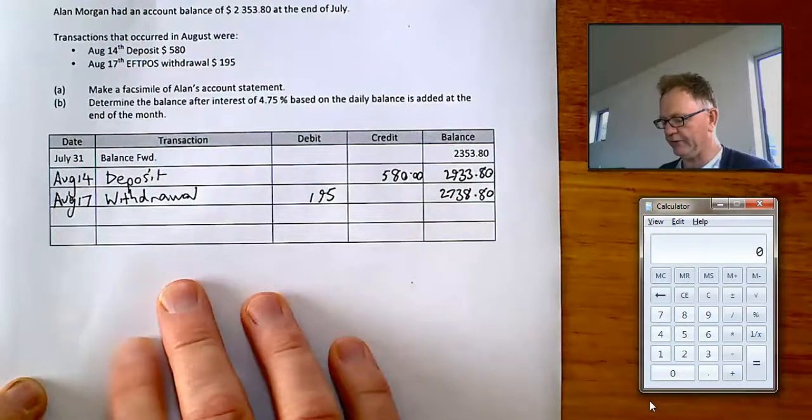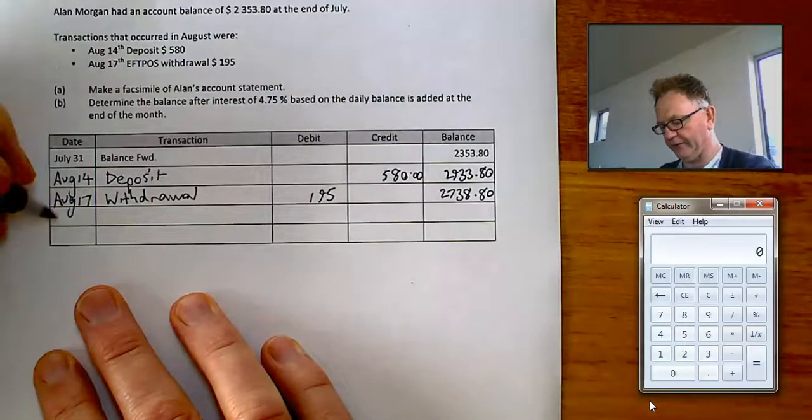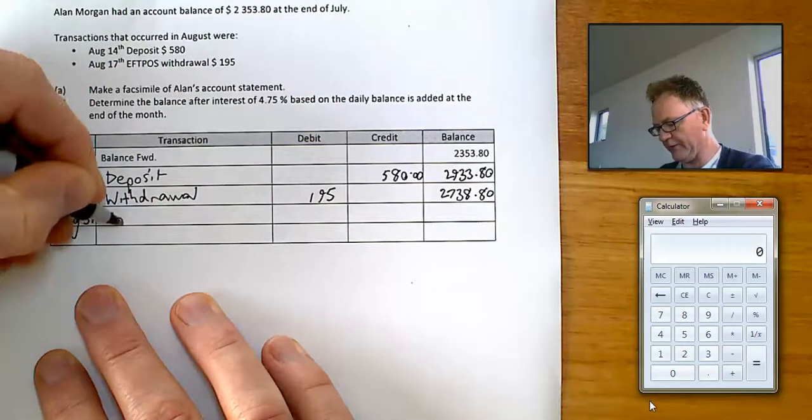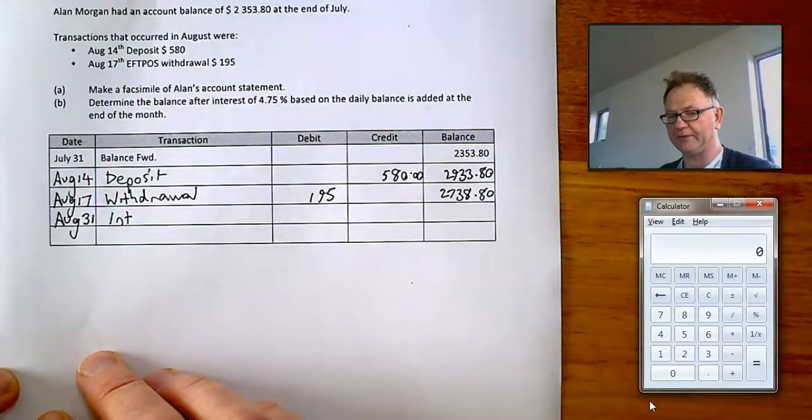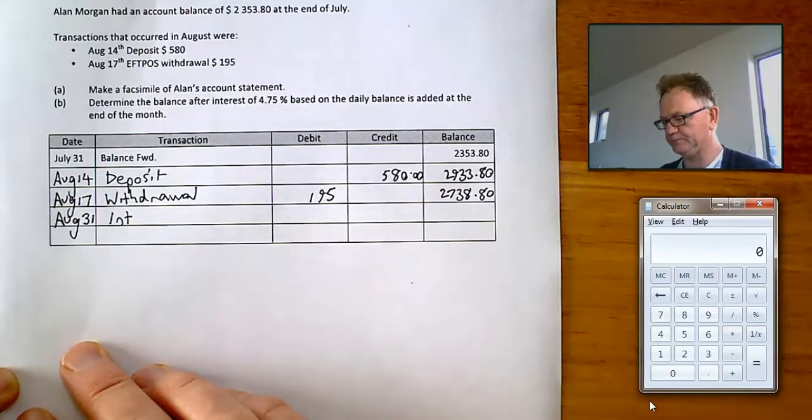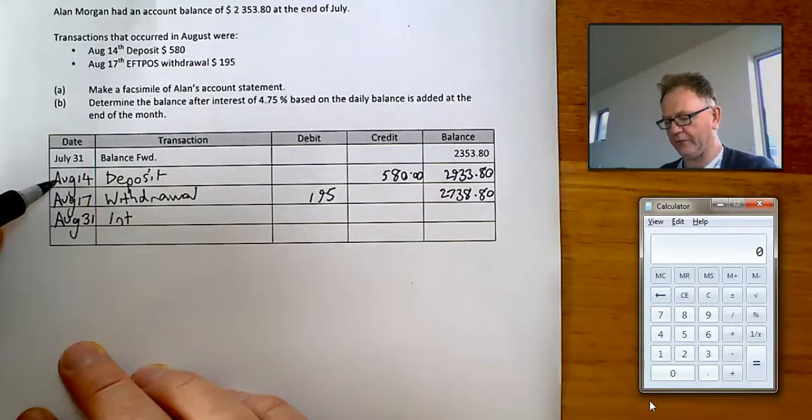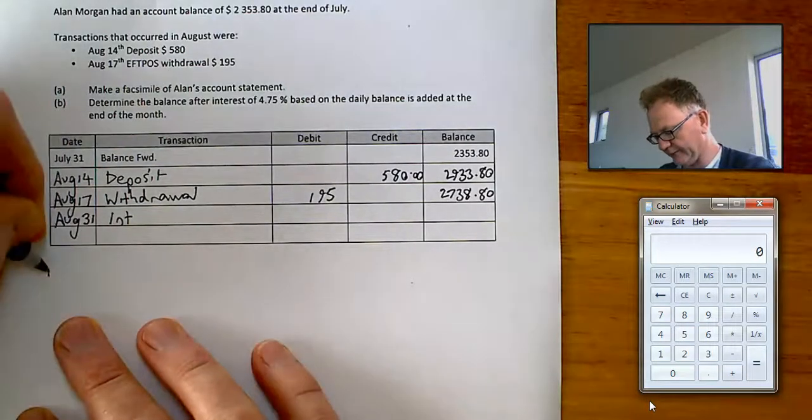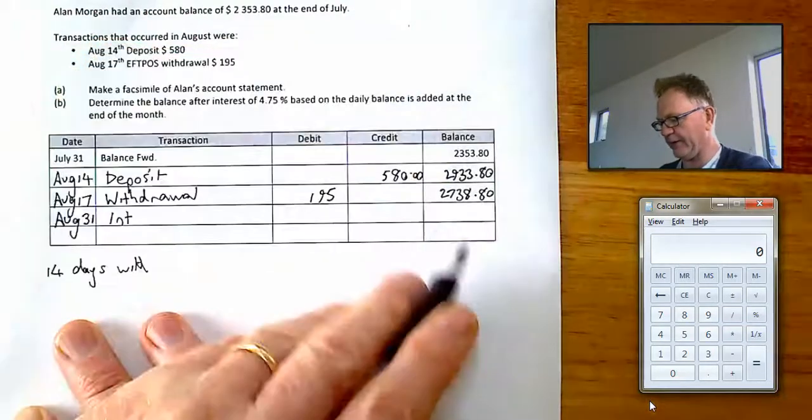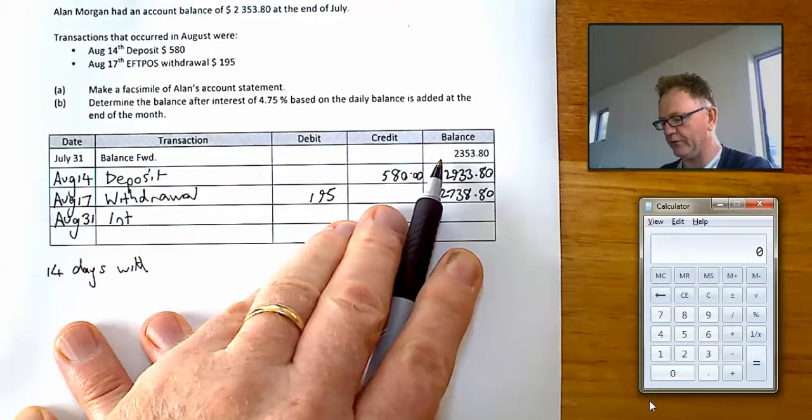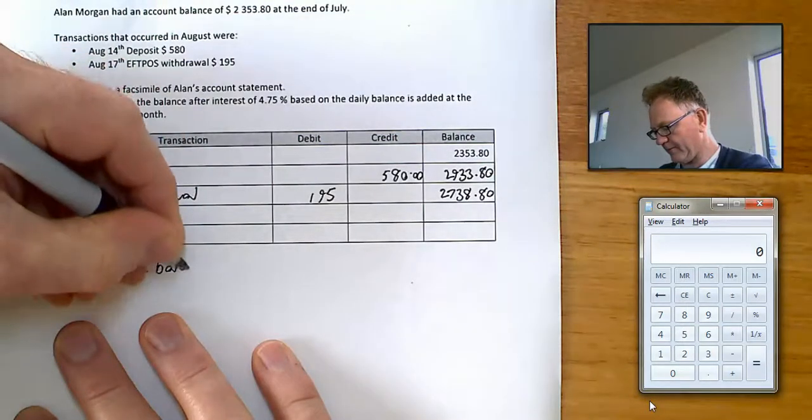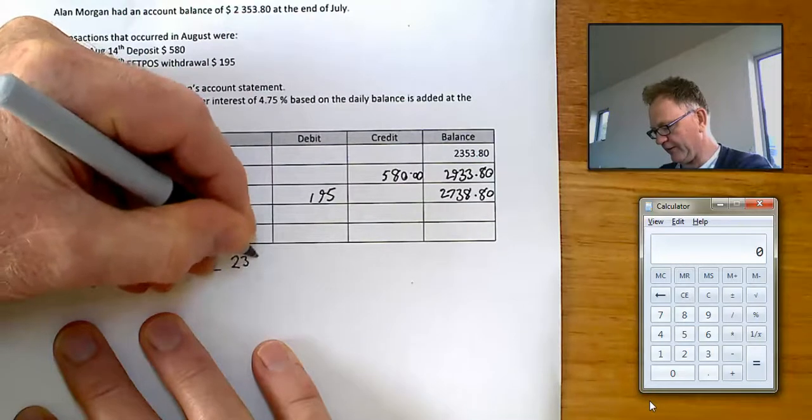Now what we have to do is we have to now work out how much interest he gets added at the end of August. August the 31st it will be. There will be some interest added. And what we have to do is do all the steps of the last question again to work it out. So let's see if we can go through as quick as we can. July the 31st to August the 14th is going to be 14 days. With this much balance. It was this much all the way through. It didn't change until August the 14th. So that's 14 days with a balance of $2,353.80.